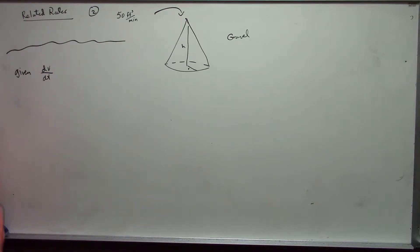And we want to find dh/dt, the rate of change of height, in a cone. The shape that we have that the gravel forms is a cone.